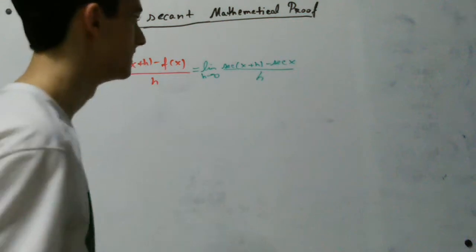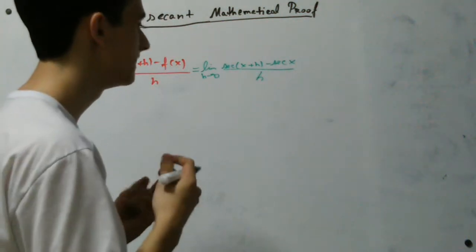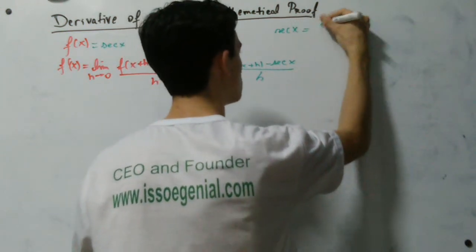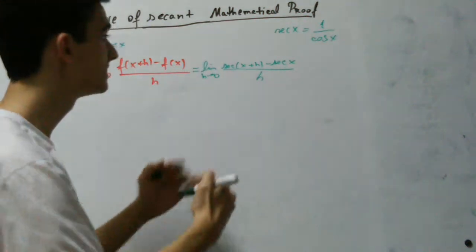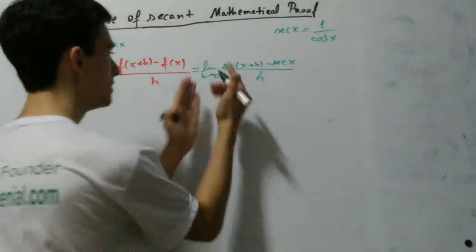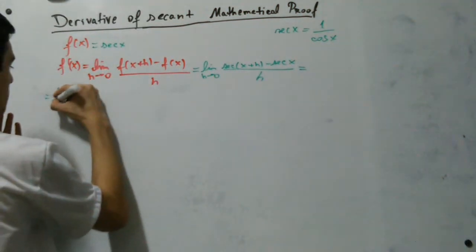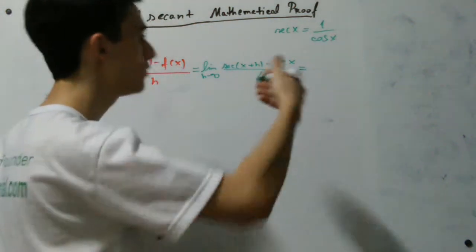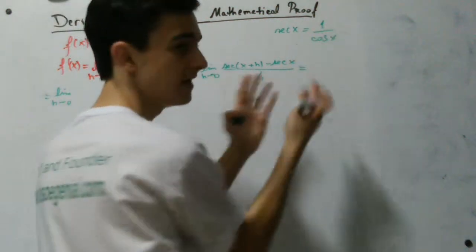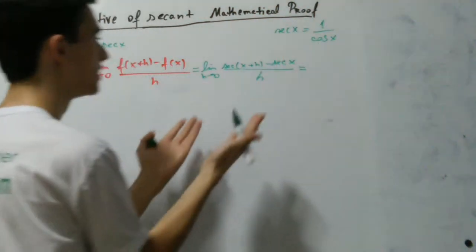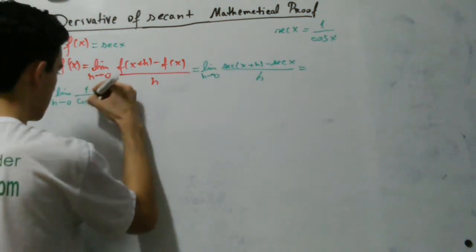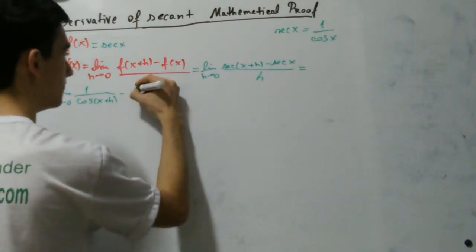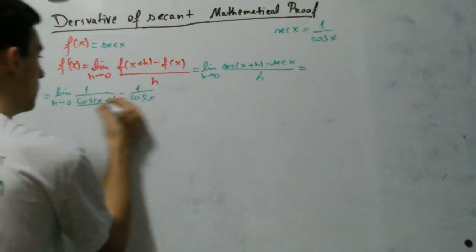Now remember, what is secant? Secant is the reciprocal function of the cosine of x — secant is 1 over cosine of x. So we're going to apply this here. Secant of (x+h) is 1 over cosine of (x+h), and secant of x is 1 over cosine of x. All of this divided by h.